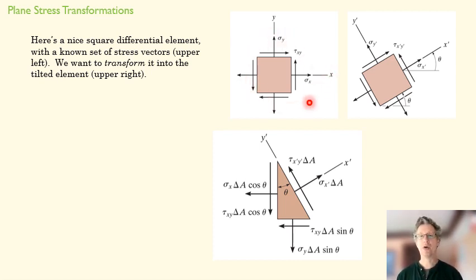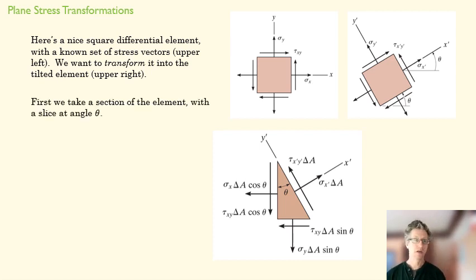Anything that doesn't have a prime on it is a known value. So we take a section of the element. Basically, it's like as if we drew a line right here. We're taking this section by cutting this face at the angle theta.